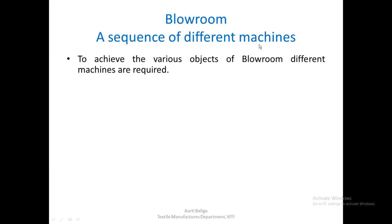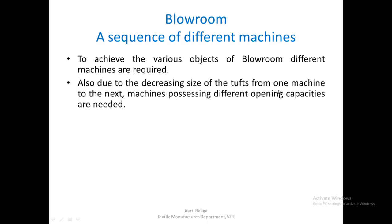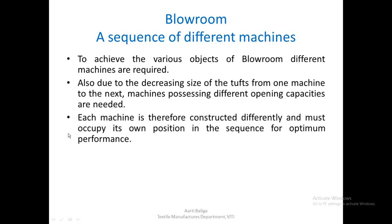Blow room is a sequence of different machines, not one single machine. To achieve the various objects of blow room, different machines are required. Due to the decreasing size of the tuft from one machine to the next, each machine has different opening capacities and different construction — for example, the spacing between spikes, the speeds, and many other factors may change depending on what kind of opening capacity is needed. Therefore, since opening must keep improving by either breaking apart or opening out, one machine is not sufficient. Each machine is constructed differently and must occupy its own position in the sequence for optimum performance.